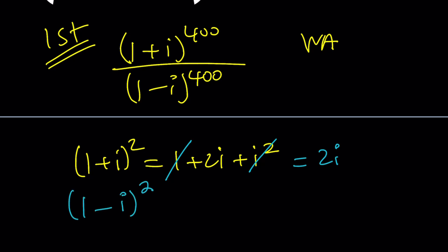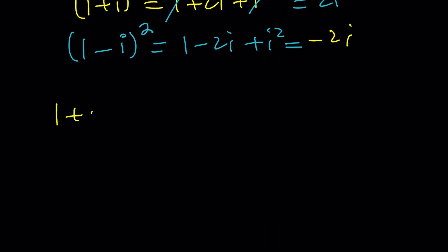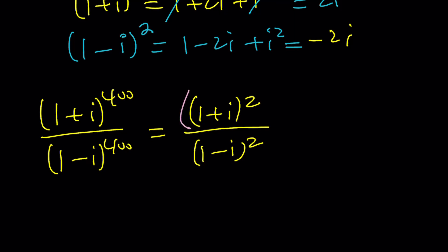1 minus i squared, on the other hand, by the same token, it's going to be negative 2i. Awesome. Now, what does this mean? It means that to raise any one of these to the power 400, you can first square it and then raise it to another power, which is going to make things a lot easier. Don't you think? So here's what we're going to do. Take 1 plus i to the power 400 divided by 1 minus i to the power 400. And now write this as 1 plus i squared and 1 minus i squared, and then raise this to the power 200 and raise this to the power 200. Because when you multiply the exponents, it'll work out, right?